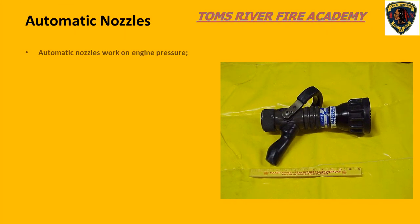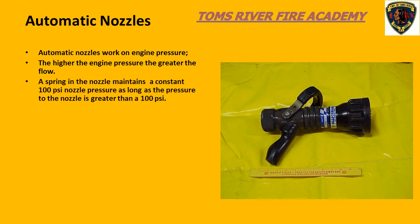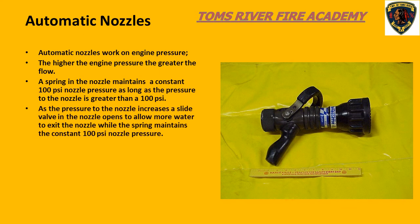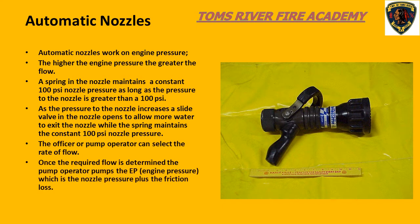Automatic nozzles work on engine pressure — the higher the engine pressure, the greater the flow. The automatic nozzle uses a spring to maintain a nozzle pressure of 100 psi, as long as the pressure to the nozzle is greater than 100 psi. As the pump operator increases the pump pressure, a slide valve inside the nozzle opens to allow more water to move through. The spring control works in conjunction with the slide valve to maintain 100 psi nozzle pressure.